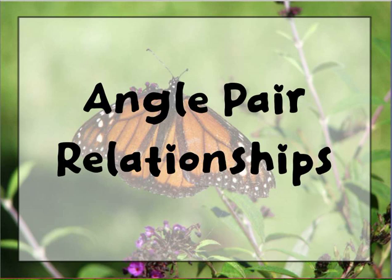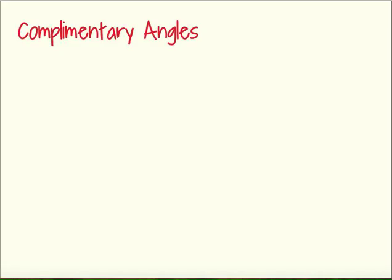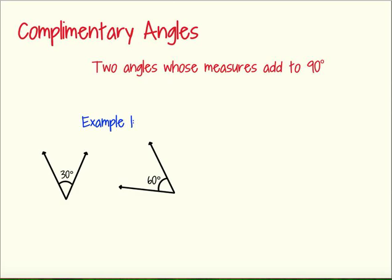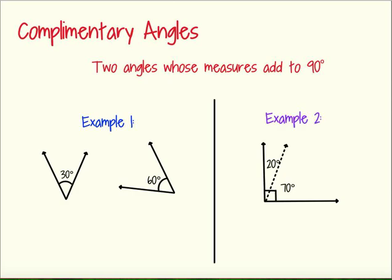Today we're going to talk about some angle pairs and the relationships that they share. We're going to start by reviewing complementary angles. Complementary angles are any two angles whose measures add to 90 degrees. They could be completely separate from each other or attached, but as long as when you add the two angle measures together and it totals 90, they are complementary. When you have an angle with a little square in the corner, that tells us it's a right angle and we're guaranteed to have 90 degrees involved.